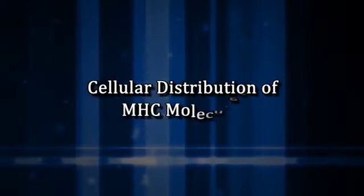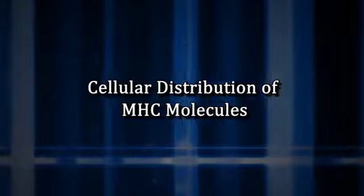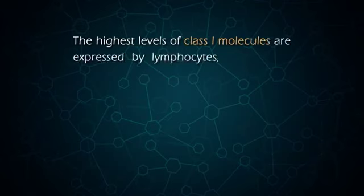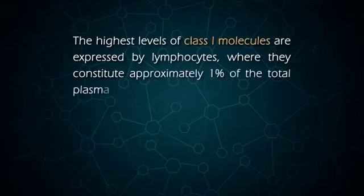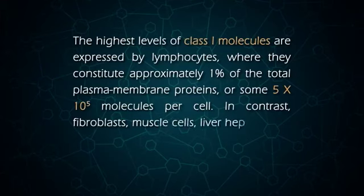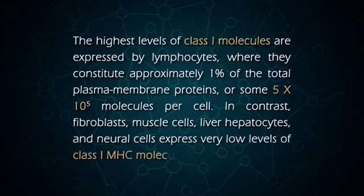Cellular distribution of MHC molecules: Class 1 MHC molecules are expressed on most nucleated cells, but the level of expression differs among cell types. The highest level of class 1 molecules is expressed by lymphocytes, where they constitute approximately 1% of the total plasma membrane proteins, or some 5×10⁵ molecules per cell. In contrast, fibroblasts, muscle cells, liver hepatocytes, and neural cells express very low levels of class 1 MHC molecules.